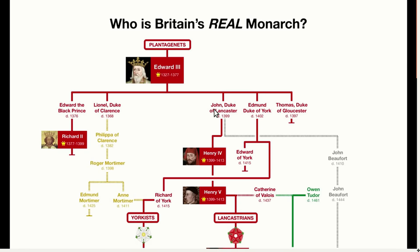You might think that the throne would therefore pass to his third son. However, most European monarchies follow a system known as primogeniture, which means that whenever possible, titles get passed down from firstborn to firstborn. So the firstborn son of a firstborn son actually takes precedence over all of his uncles. When Edward III died, the throne passed directly to his grandson, Richard II.